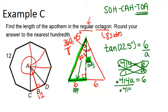And then I'll divide both sides by 0.414 in order to get a. And I get that a equals 14.49, rounded to the nearest hundredth.